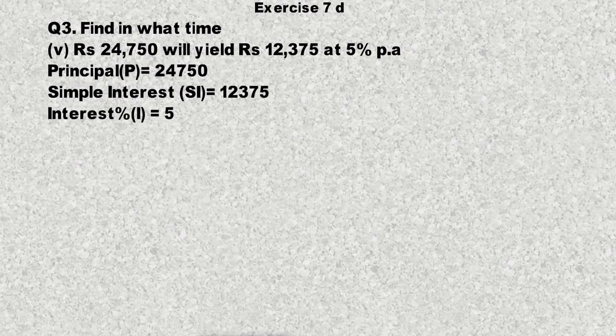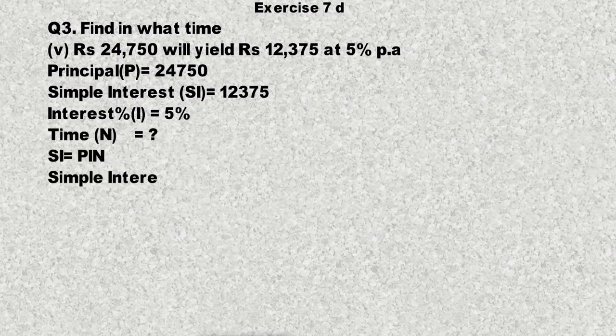Interest percentage i = 5%، time n یعنی number of years ہمارے پاس نہیں ہے، وہ ہم find کر رہے ہیں۔ SI = PIN کا formula لگائیں گے: Simple Interest = Principal × Interest × Number of Years۔